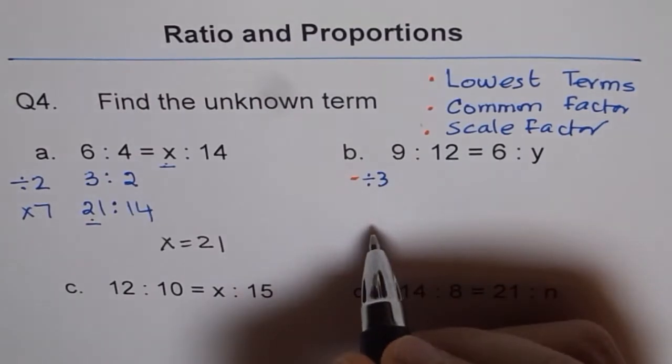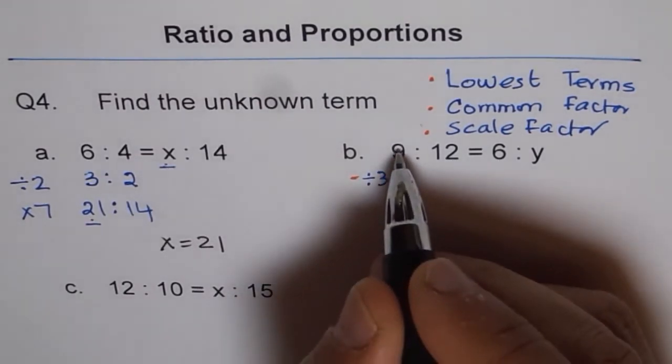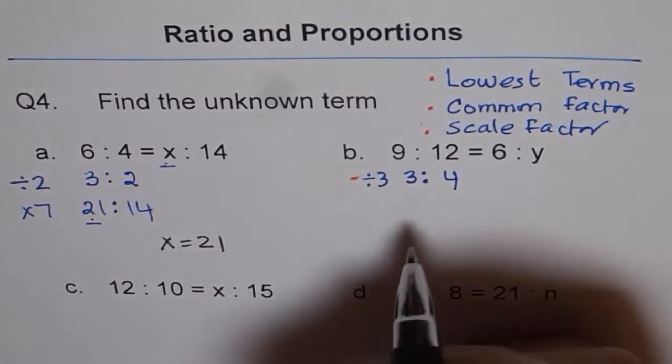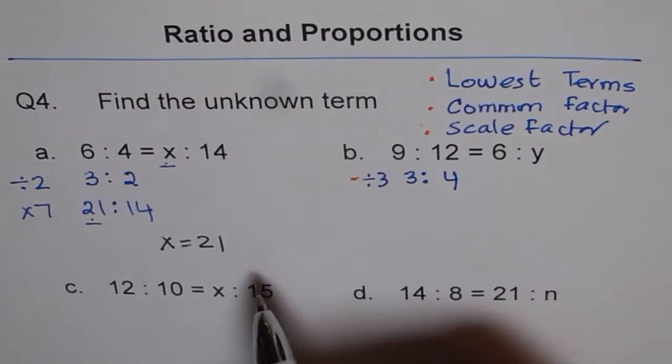So if I divide both by 3, what do I get? 9 divided by 3 is 3, and 12 divided by 3 is 4. So this is the lowest term. It's the first step. Lowest terms.